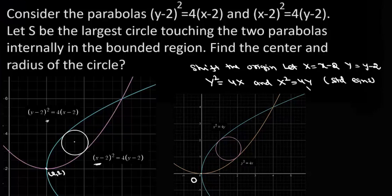Now if we solve these two equations we already know the points of intersection are (0,0) and (4,4). Y² = 4X and X² = 4Y are inverse images of each other, so basically the reflection of each other about y = x line.